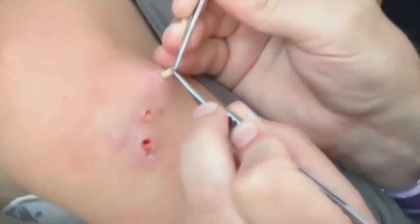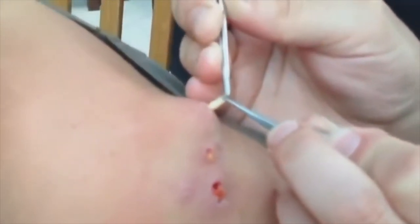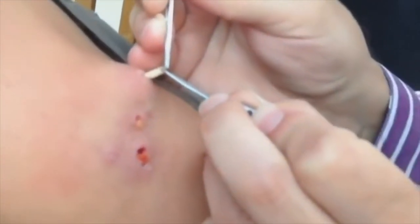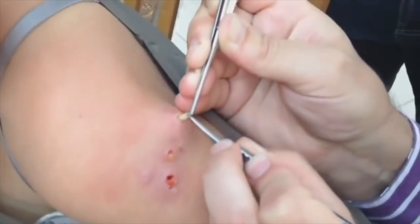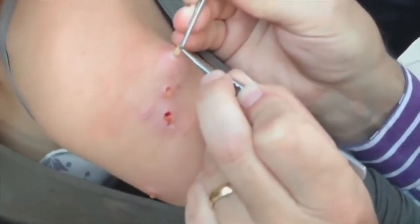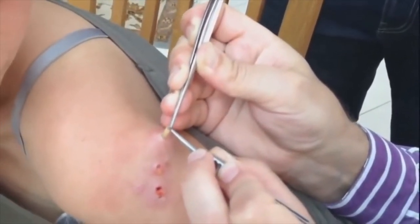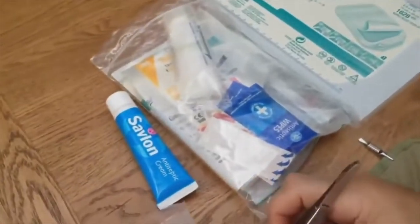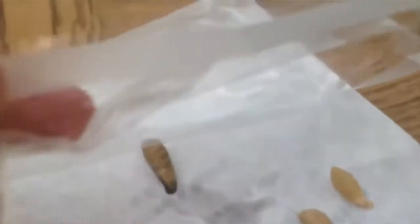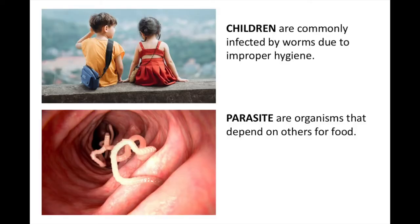Parasitic infection or infestation can occur in children of all ages. Infants, toddlers, and very young children in daycare settings are at risk for some types of parasitic diseases. Worms are parasites that live inside the body and suck the nutrients from their host. The child gets harmed or sick while the parasite benefits by feeding on the nutrients from the host body. Parasites do not kill their host but usually cause relatively minor damage. Some parasites also live outside the surface of the host. Parasitism is a relationship in which one organism benefits while the other organism is harmed.